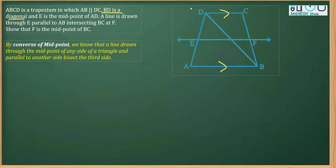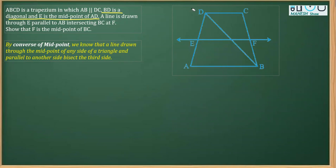Further, it says that BD is a diagonal and E is the midpoint of AD. A line is drawn through this midpoint E, and it is parallel to AB.